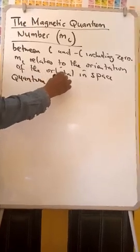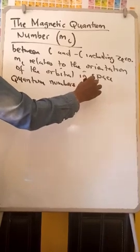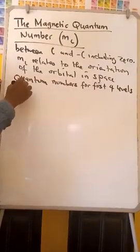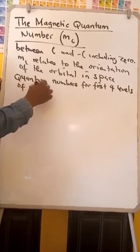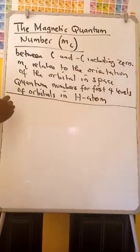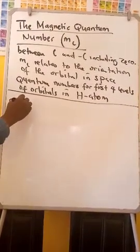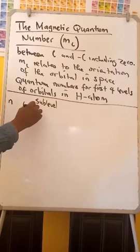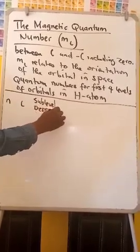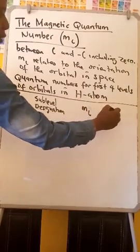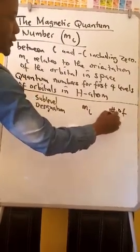Quantum numbers for the first four levels of orbitals in the hydrogen atom. The columns are: N, L, sub-level, sub-level designation, the value of ML, and number of orbitals.